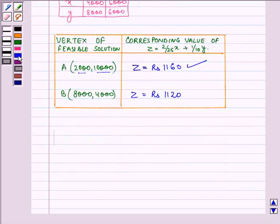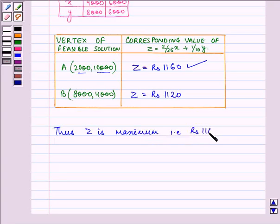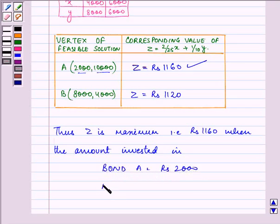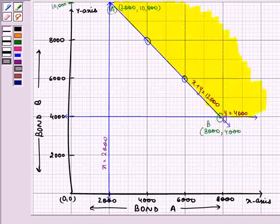Thus, Z is maximum, that is rupees 1,160, when the amount invested in bond A is equal to rupees 2,000 and bond B is equal to rupees 10,000. And the maximum interest is also found out at rupees 1,160. So this completes the session. Hope you understood this graph well and have a nice day ahead.